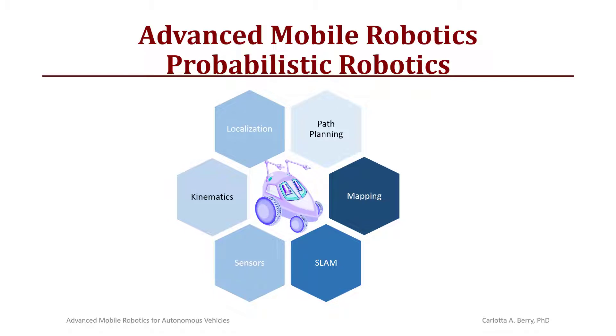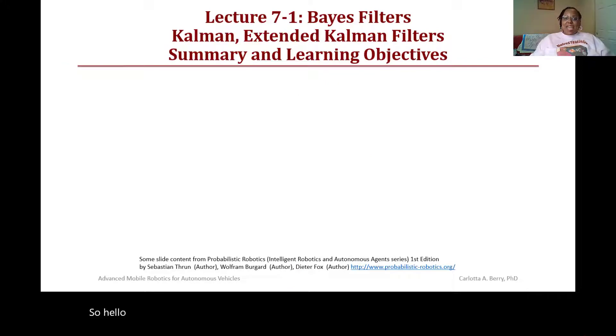Hello and welcome back. Just as a review of the topics covered in our advanced mobile robotics course with a focus on probabilistic robotics, the topics include localization, path planning, mapping, SLAM, kinematics, and sensors. Today we will have Lecture 7-1 on Kalman and Extended Kalman Filters.